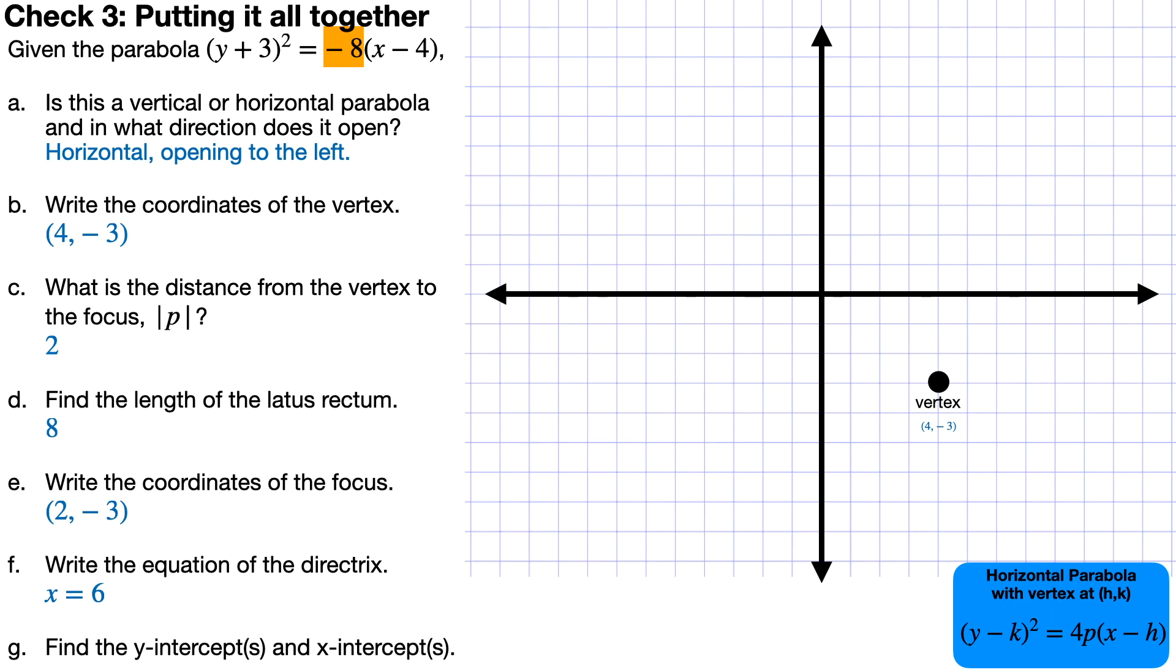The distance from the vertex to the focus is 2. Okay? p is negative 2, the absolute value of p is positive 2. And you know that because 4p is negative 8. If 4p is negative 8, then p is going to be negative 2 and the absolute value of p is going to be 2. So the focus is going to be 2 to the left of the vertex and the directrix is going to be 2 to the right of the vertex. Okay? So the directrix is going to be x is equal to 6 and the focus is going to be (2, -3).